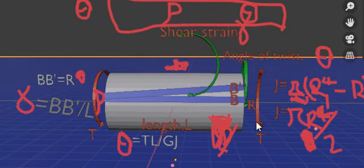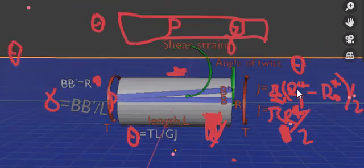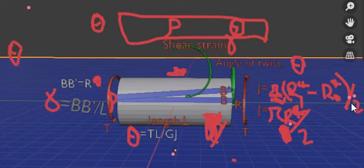J is the polar second moment of area. J can be calculated for a hollow section as pi times outer radius to the power 4, minus inner radius to the power 4, divided by 2, or for a solid section is simply pi R to the power 4, divided by 2.